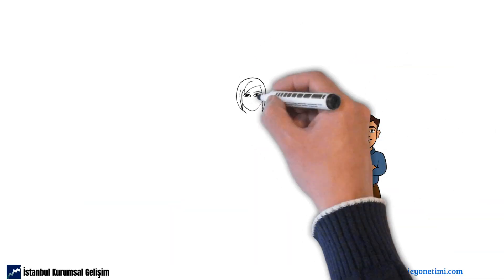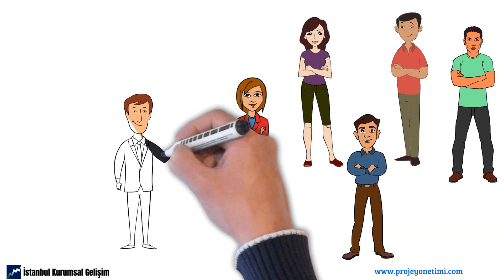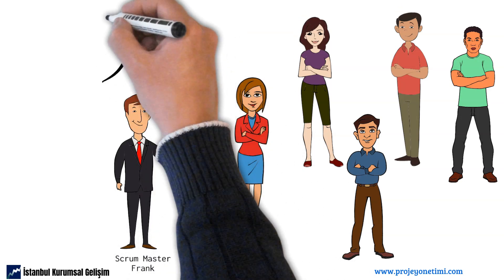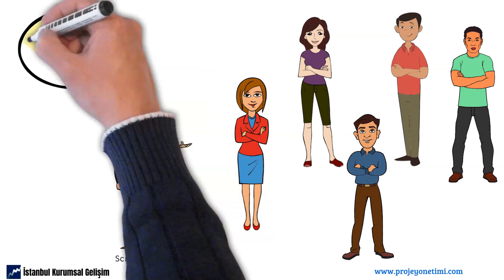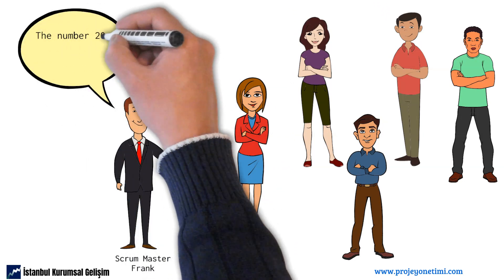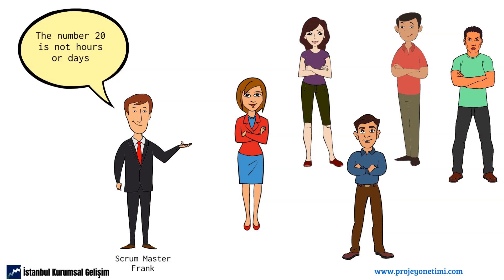Then Frank reminds the team: 'Guys, I would like to remind you that the equivalent of 20 is not 20 hours or 20 days. But from now on, when estimating other items, it will be easier for us to compare them to this item and rate them for difficulty and complexity.' By estimating other items, story points are given to each item in the backlog.